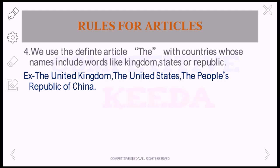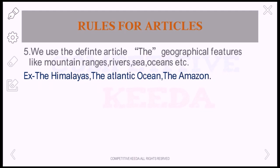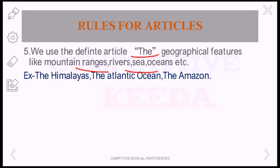We use the definite article 'the' with countries whose names include words like 'kingdom,' 'states,' or 'republic' — for example, the United Kingdom, the United States, the People's Republic of China. We also use 'the' with geographical features like mountain ranges, rivers, seas, and oceans. For example, the Himalayas, the Atlantic Ocean — you cannot say only 'Atlantic Ocean.'